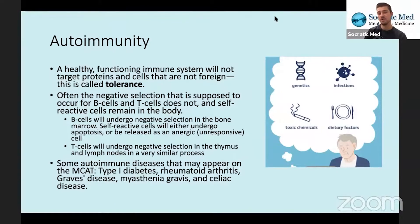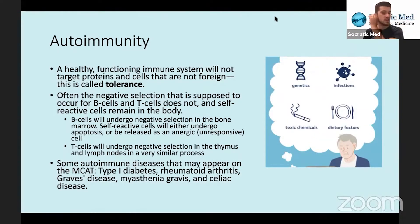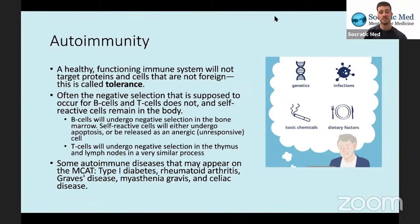In autoimmunity, that elimination does not happen, and B and T cells will react against the host cells — against our own cells. B cells undergo negative selection in the bone marrow, just like T cells in the thymus. Self-reactive cells will either undergo apoptosis or be released as anergic cells, which are simply unresponsive. It's another way the immune system shuts off a cell rather than destroying it. T cells also undergo negative selection in the thymus and lymph nodes in a very similar process, though to a lesser extent in the lymph nodes.